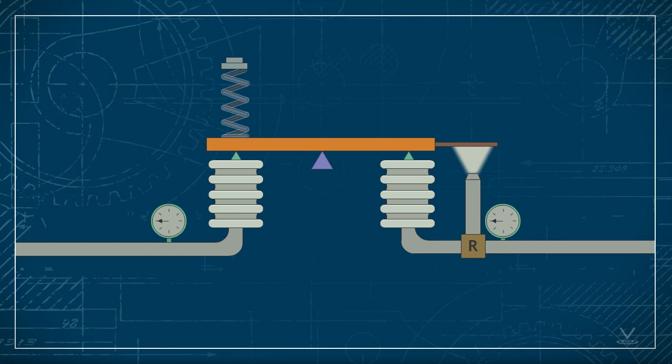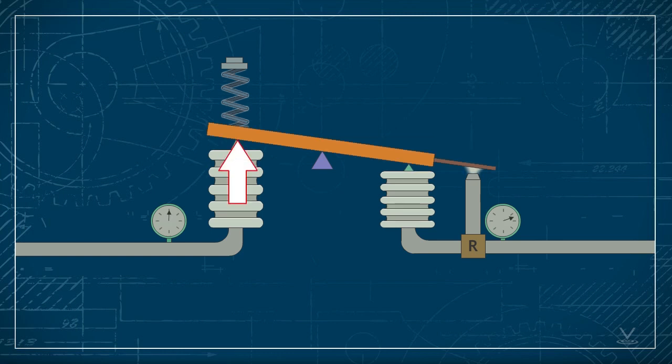Let's see how all the controller's mechanisms work together when the process variable exceeds setpoint. The input bellows expands and its force overcomes the tension of the setpoint spring. The controller is now out of balance. When the input bellows expands, the beam pivots, bringing the flapper closer to the nozzle and increasing back pressure.